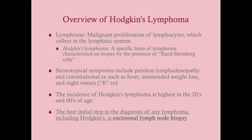The incidence of Hodgkin's lymphoma is highest in the 20s and in the 60s, giving it a bimodal distribution. The best initial step in the diagnosis of any lymphoma, including Hodgkin's, is excisional lymph node biopsy — meaning you take the entire lymph node out, not just a needle biopsy. If you use a needle biopsy and it comes back negative but the patient has grade 4 lymphoma, you risk malpractice. Always use excisional biopsy to diagnose or rule out lymphoma.